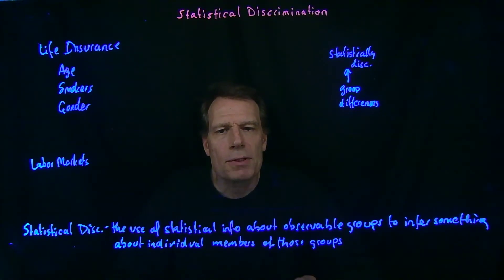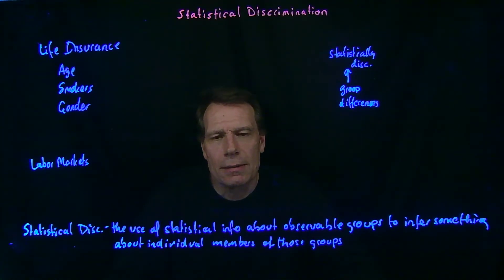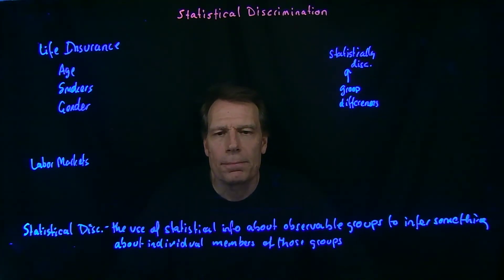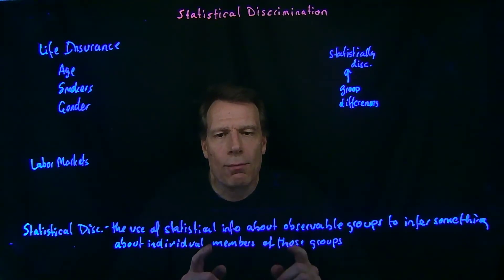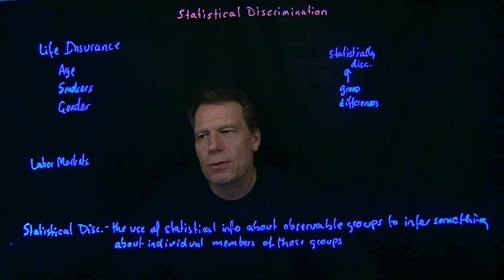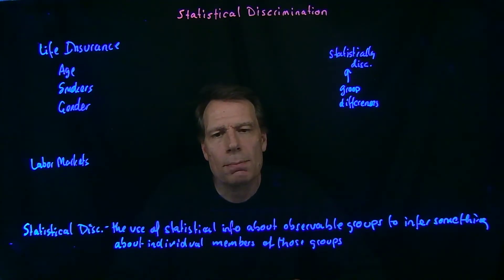So I might end up statistically discriminating based on the observable group statistics that tell me that women, on average, are more likely to leave the labor force for extended periods than men. I might be wrong in this particular case, but I'll be right on average more often than I'm wrong. That's another form of statistical discrimination based on gender, just as we saw statistical discrimination based on gender against men in life insurance markets.